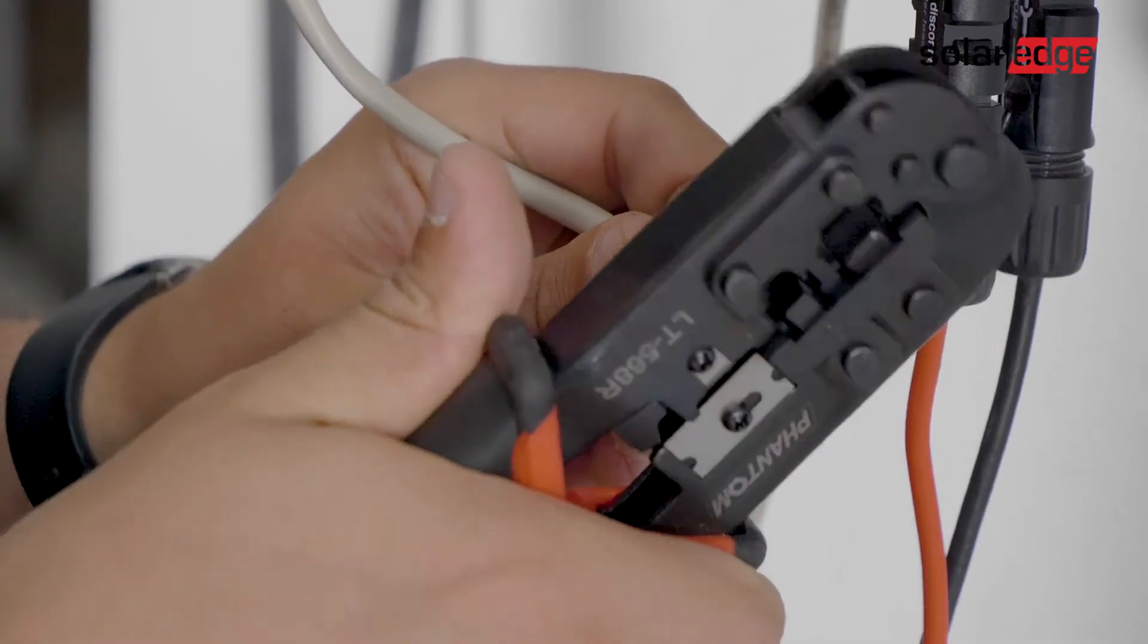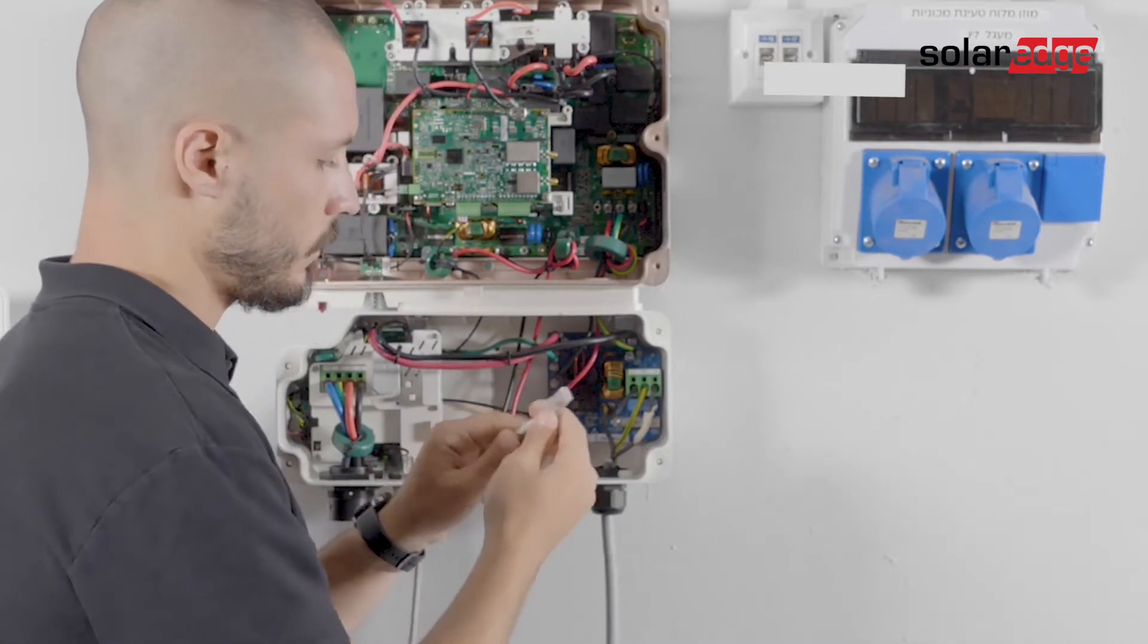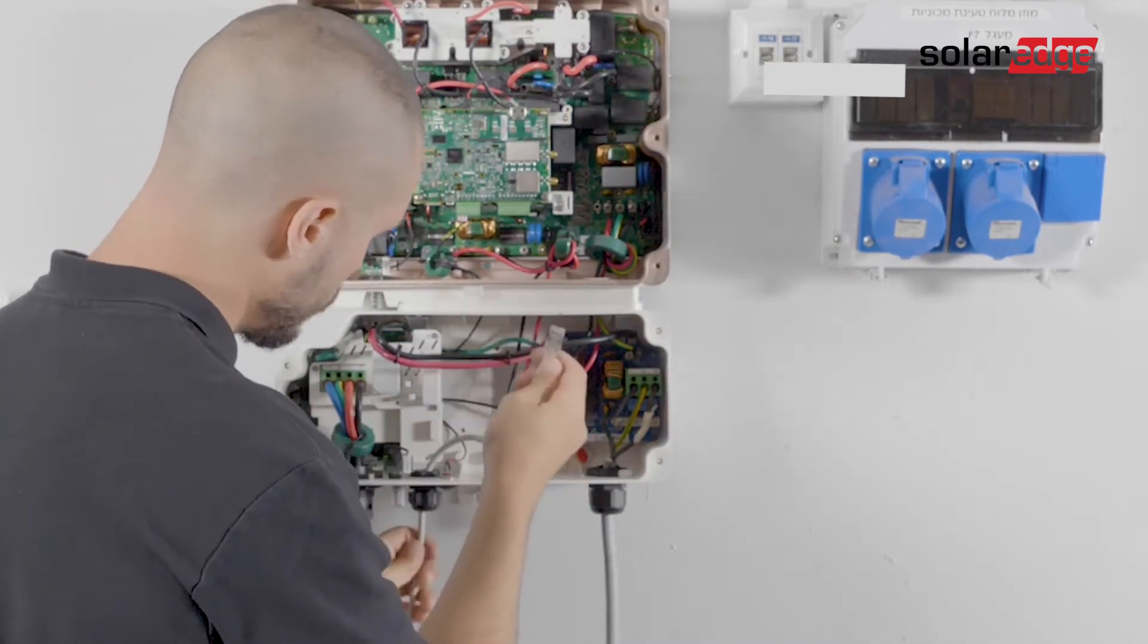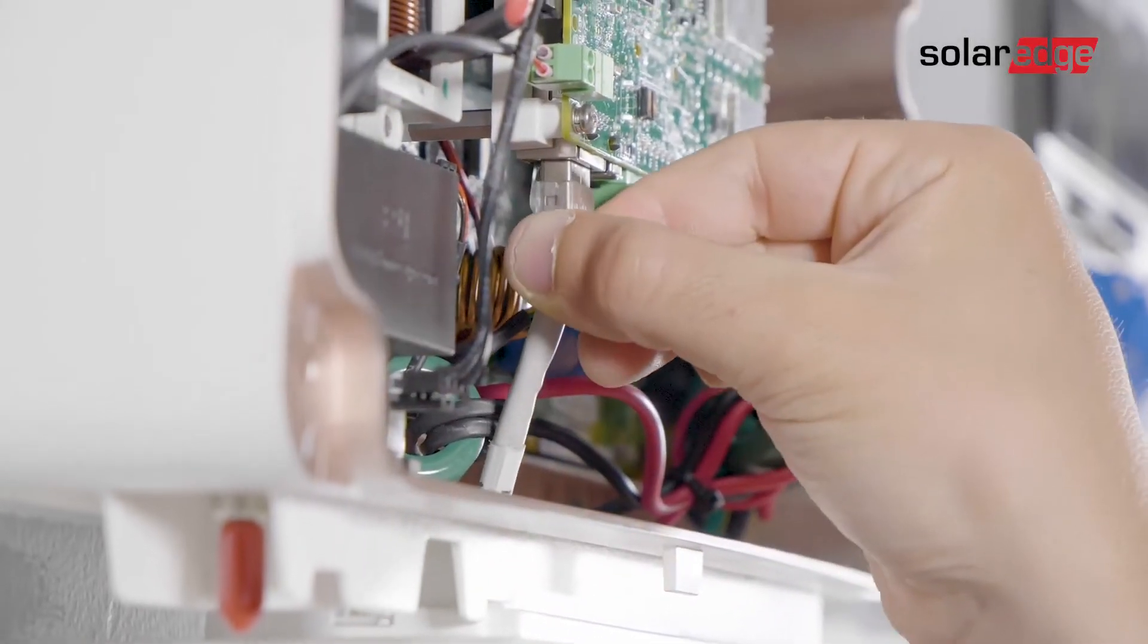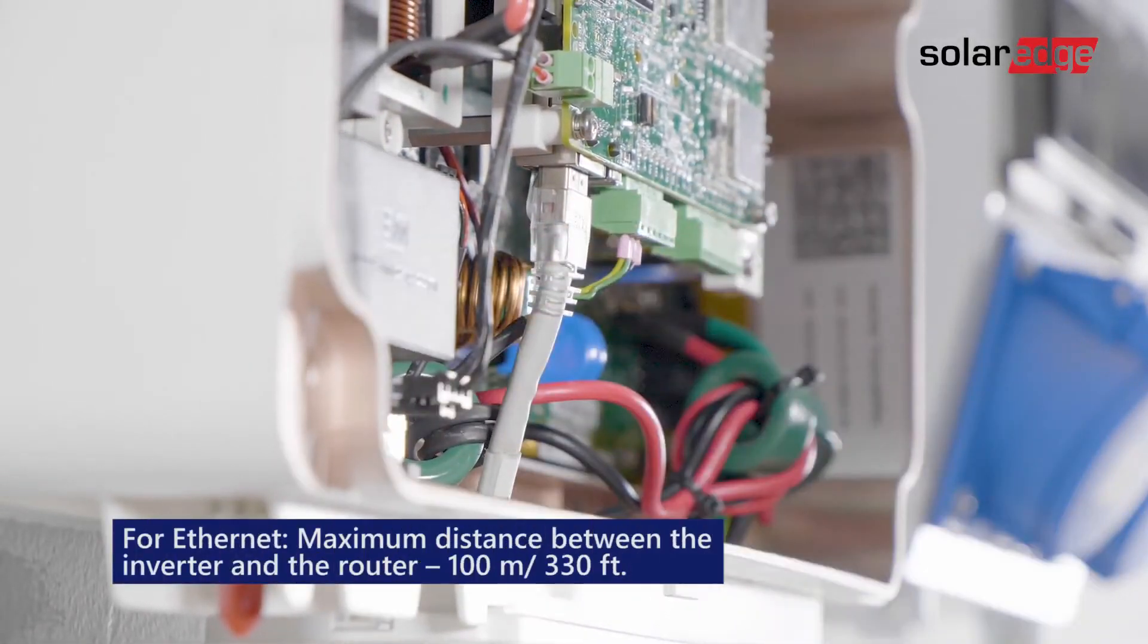For Ethernet use Cat5 or Cat6 twisted pair cable type with a RJ45 connector. Finally connect the Ethernet cable to the RJ45 interface on the communication card.